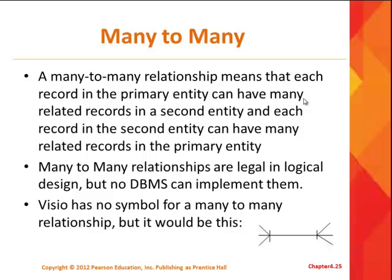We're going to finish up Chapter 4, Logical Design, finishing up these slides where we left off with many-to-many relationships. We talked about one-to-one and one-to-many, and now we have this phenomenon called a many-to-many relationship. That just means each record in an entity can have many related records in the second entity, and vice versa. The most important point is that many-to-many relationships are legal in logical design, but no database management system can implement them.